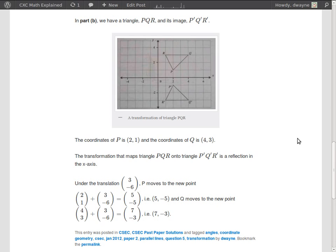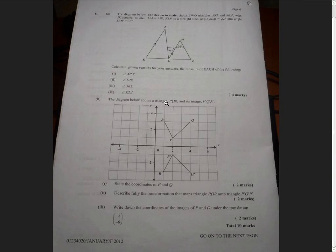The diagram below shows a triangle PQR and its image P'Q'R' with the coordinates of P and Q. So P has coordinates (2,1) - we move two units along the x-axis and one unit up to get P. And Q has coordinates - we move four units along the x-axis and three units up to get Q. So Q has coordinates (4,3).